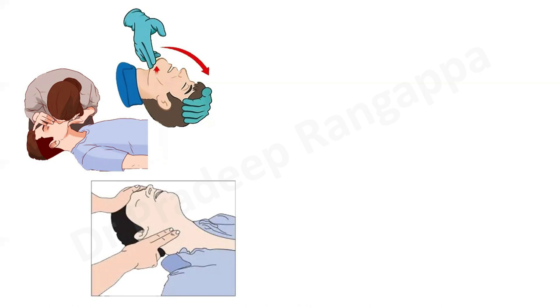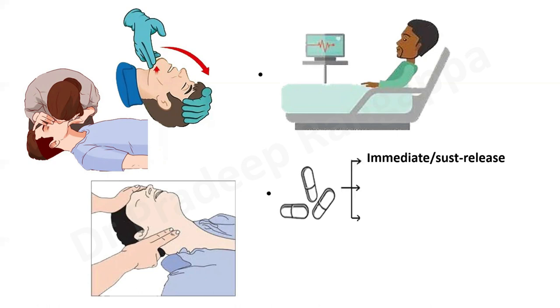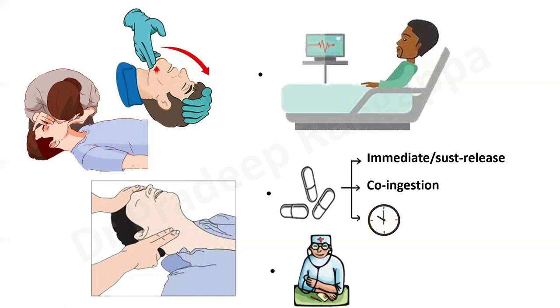When it comes to treatment, the tenets of any toxicity are airway, breathing, and circulation. If someone is obtunded, you need to take care of the airway and ensure adequate breathing, assist with bag-mask ventilation, and assess circulation. Someone with calcium channel blocker overdose needs to be admitted to ICU, connected to a cardiac monitor, with heart rate, saturation, and blood pressure monitored. History is very important — ascertain whether they took immediate-acting or sustained-release CCBs, whether there was co-ingestion with other medications, and the lag time before presentation, as that determines how much absorption has occurred.